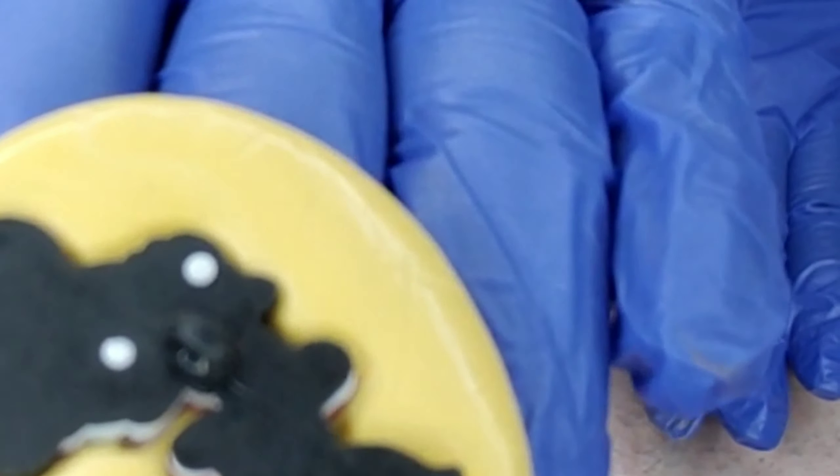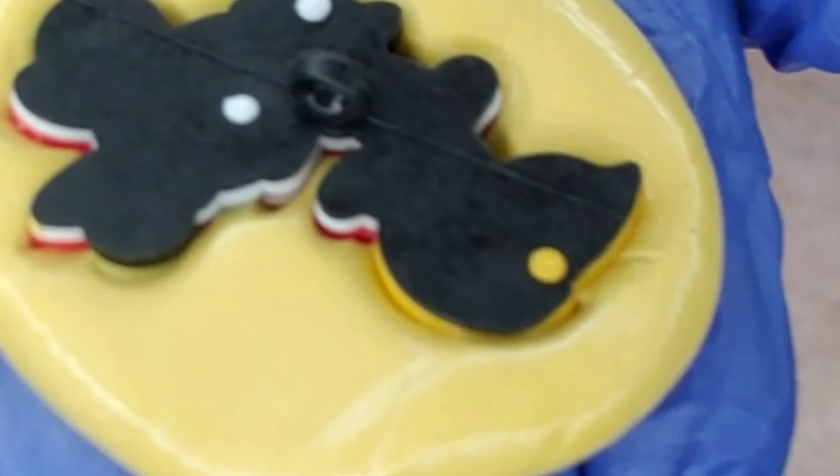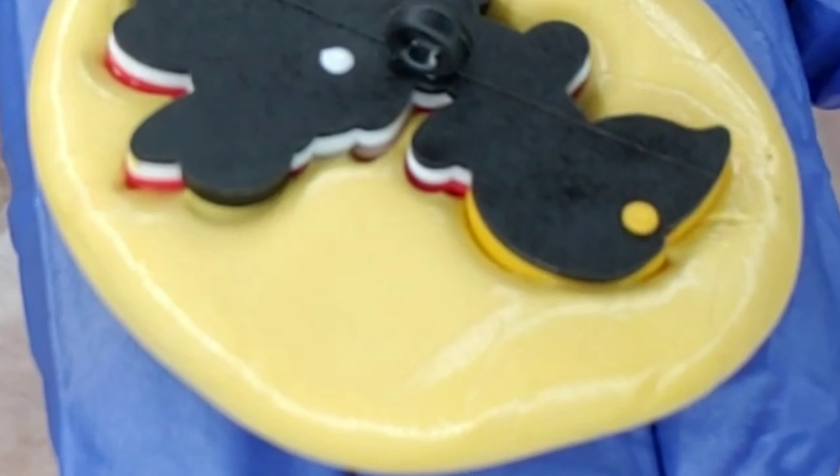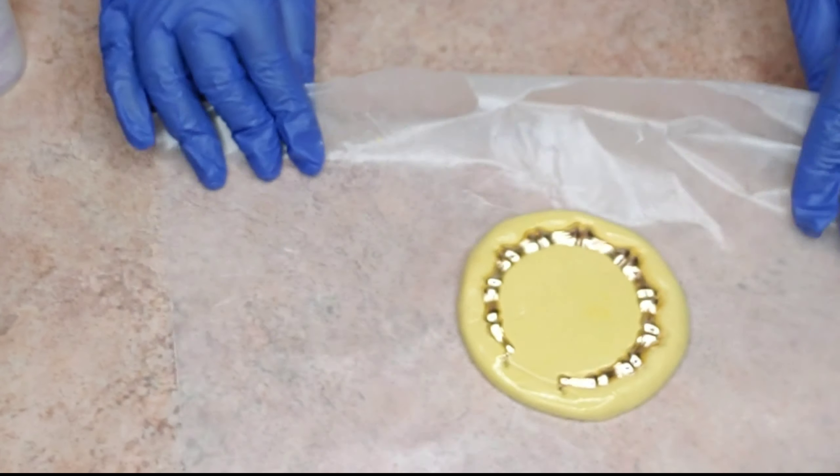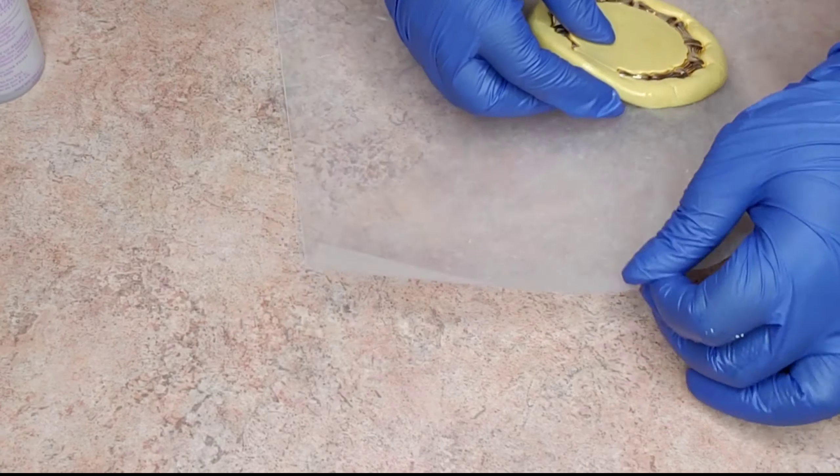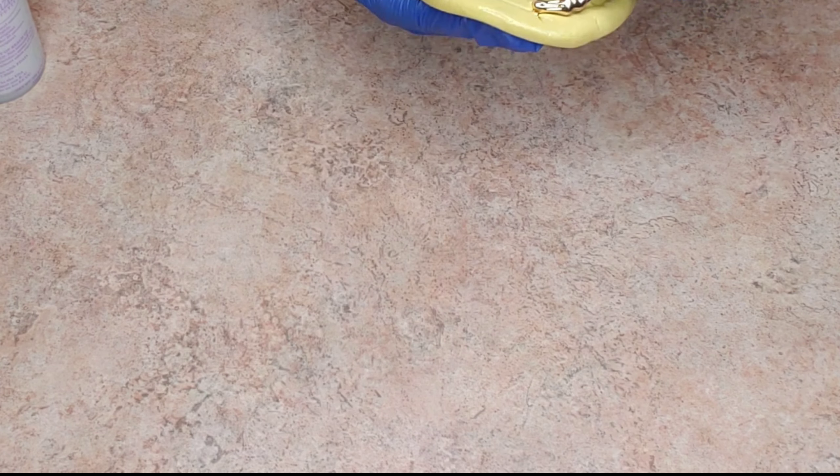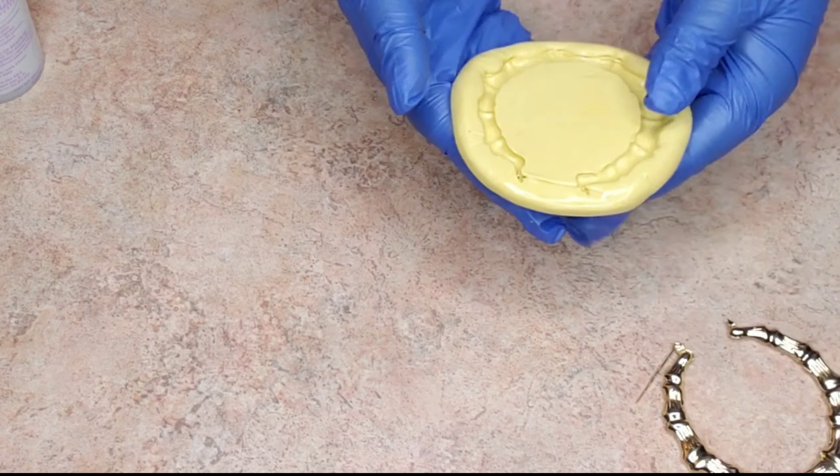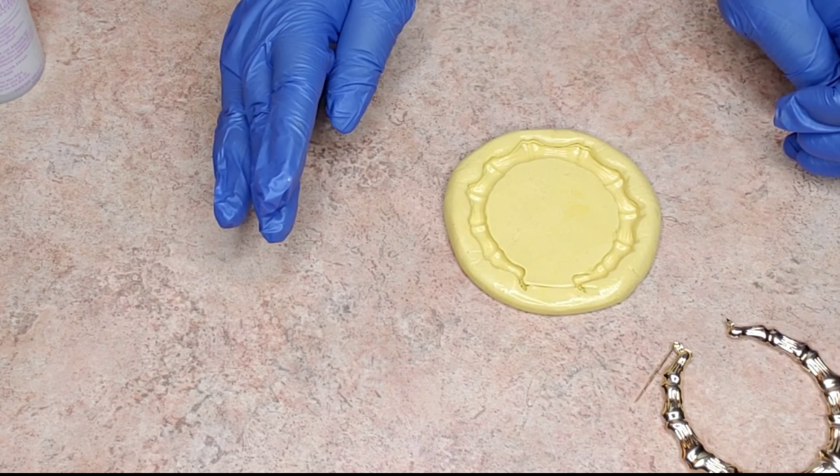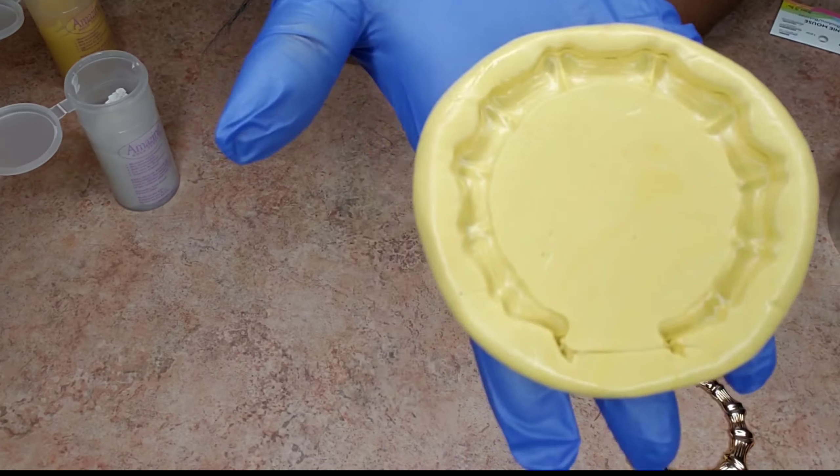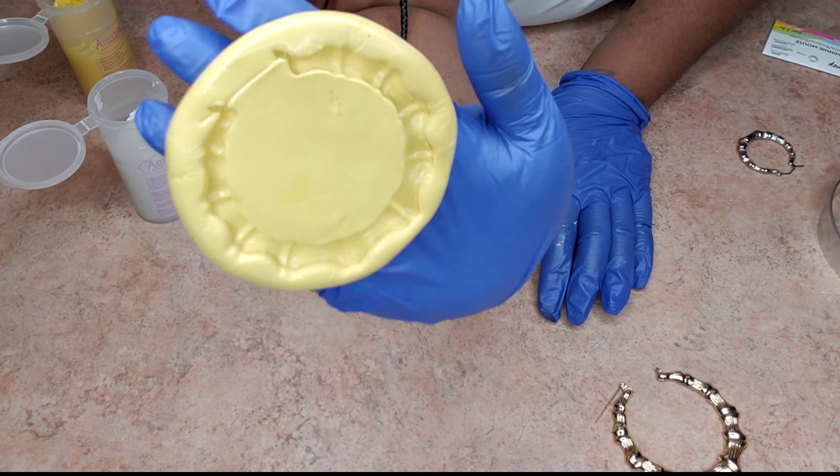Now that my silicone mold is hard, I'm just going to pop the earring out. It comes out fairly easy, and there's your mold. You can apply chocolate, fondant, or even put water in there to make ice cubes. But most of these are being used for fondant for 90s or vintage themes.